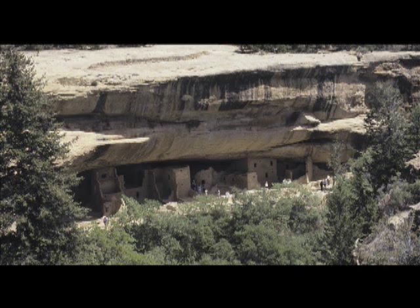A third form of interaction between a culture and nature is one that is antagonistic or dominating. People view the environment as working against them and something that must be overcome and ruled. Unmodified nature is seen as a waste of land. Economies are focused upon a few products that are heavily selected for human control and are often dependent upon people for reproduction. This view is commonly held by agricultural societies, particularly where agriculture has been intensified to the point of loss of most wild places or development of extensive cities with dense populations that are isolated from nature.